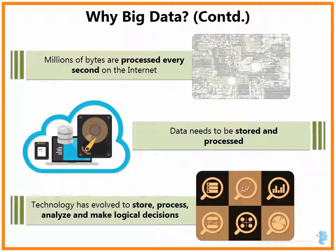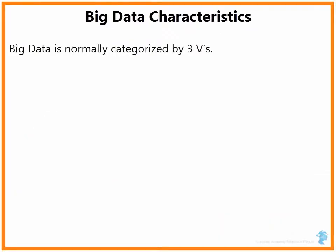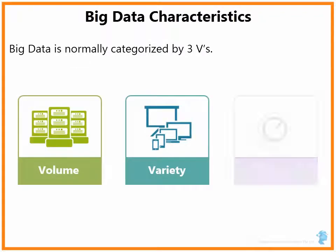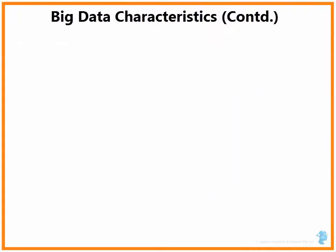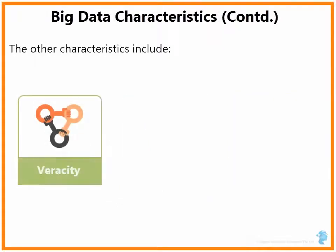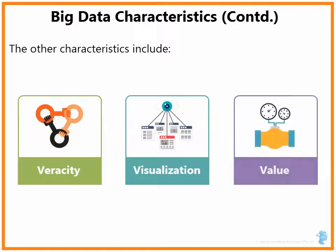We will explore the three Vs of Big Data. Big Data is normally characterized by three Vs: volume, variety and velocity — not necessarily in that order. Other Vs are also considered but not as popular. Some of these are veracity, visualization and value. Veracity here refers to the truthfulness of data.